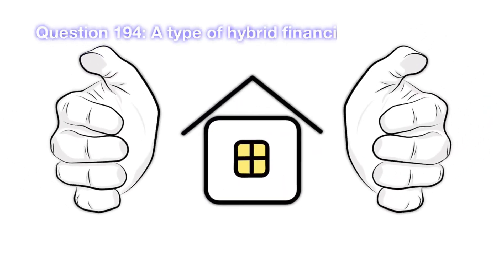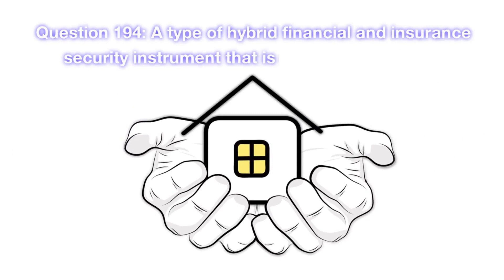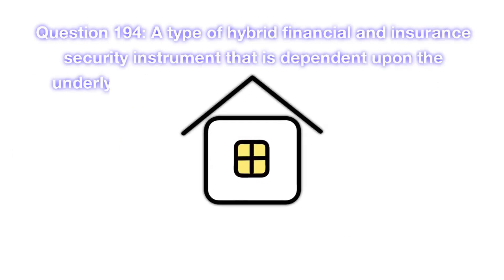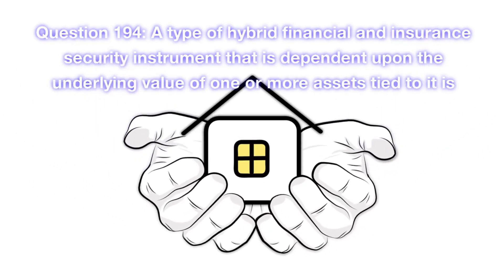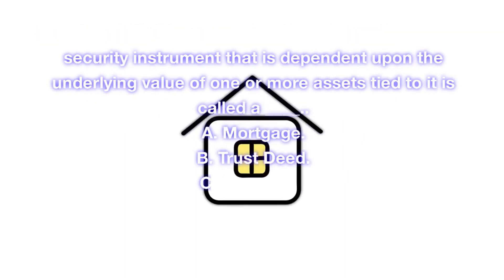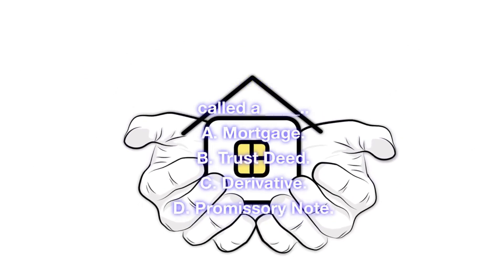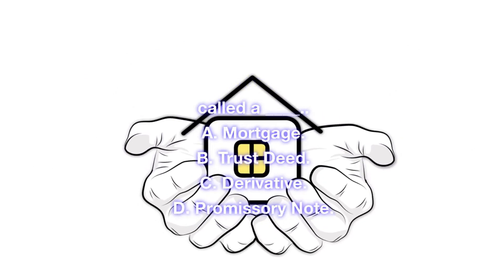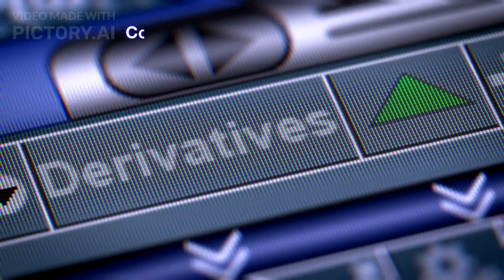Question 194. A type of hybrid financial and insurance security instrument that is dependent upon the underlying value of one or more assets tied to it is called ____. A. Mortgage. B. Trust deed. C. Derivative. D. Promissory note. Correct answer is C. Derivative.